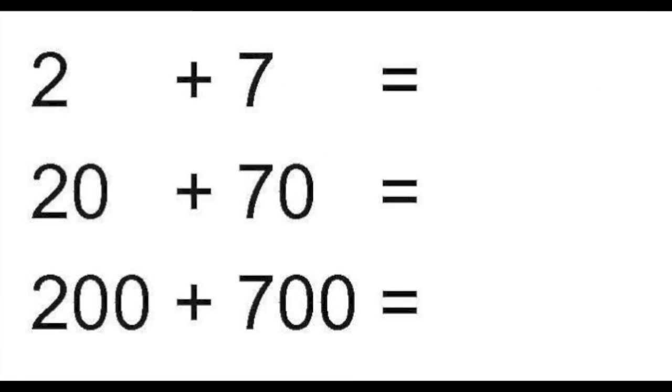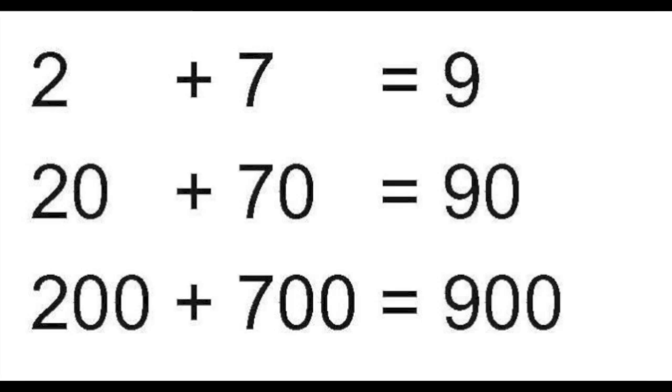So now let's look at the same addition pattern in a different way. Here we have 2 plus 7, 20 plus 70, and 200 plus 700. Notice that all of these problems use the same numbers, 2 and 7. So they will have similar answers. Here we have 2 plus 7, which equals 9. Next is 20 plus 70, which is the same thing as 2 plus 7, but it has a 0 attached at the end. So 20 plus 70 equals 90. Next is 200 plus 700, which equals 900, because there are 2 zeros attached to the 2 and the 7.